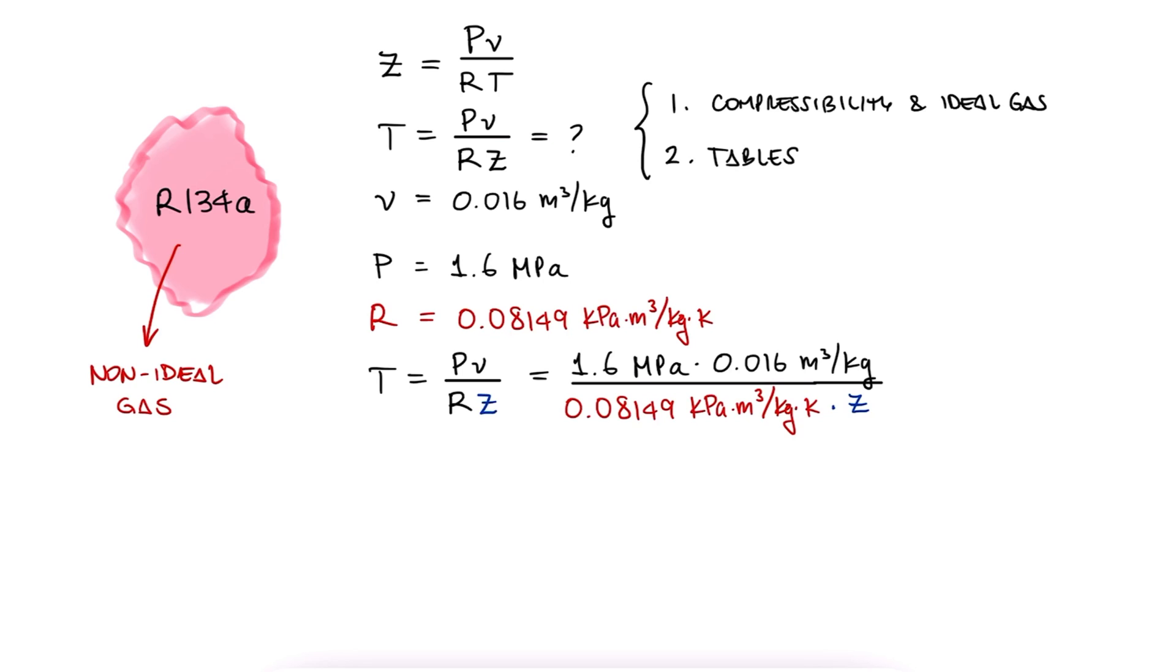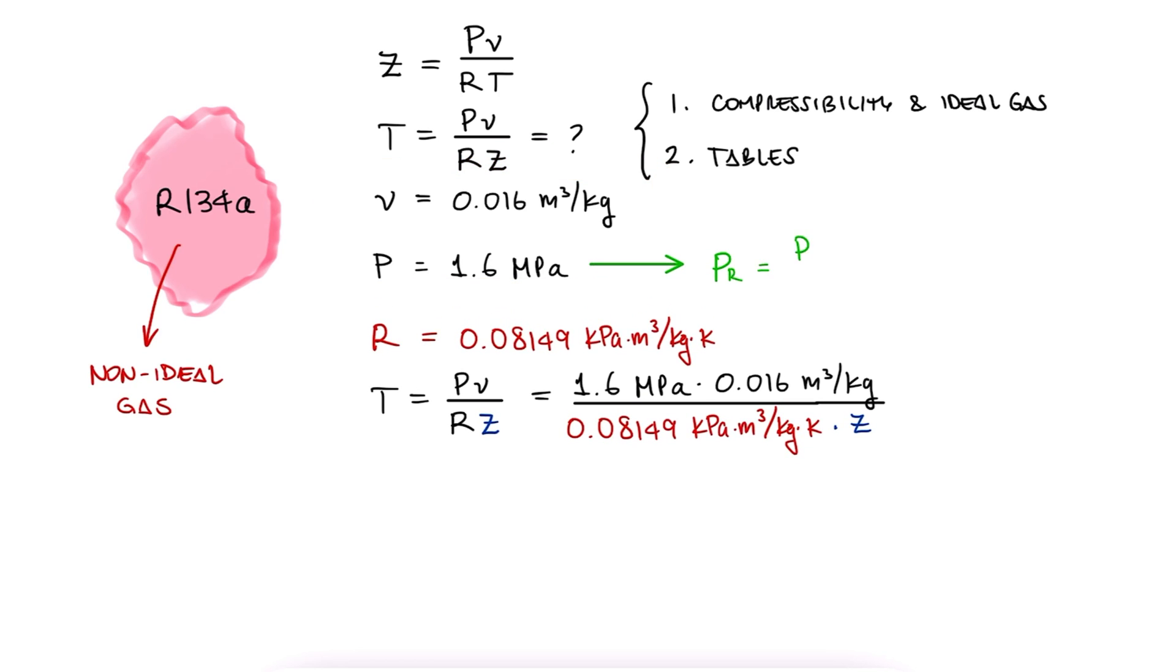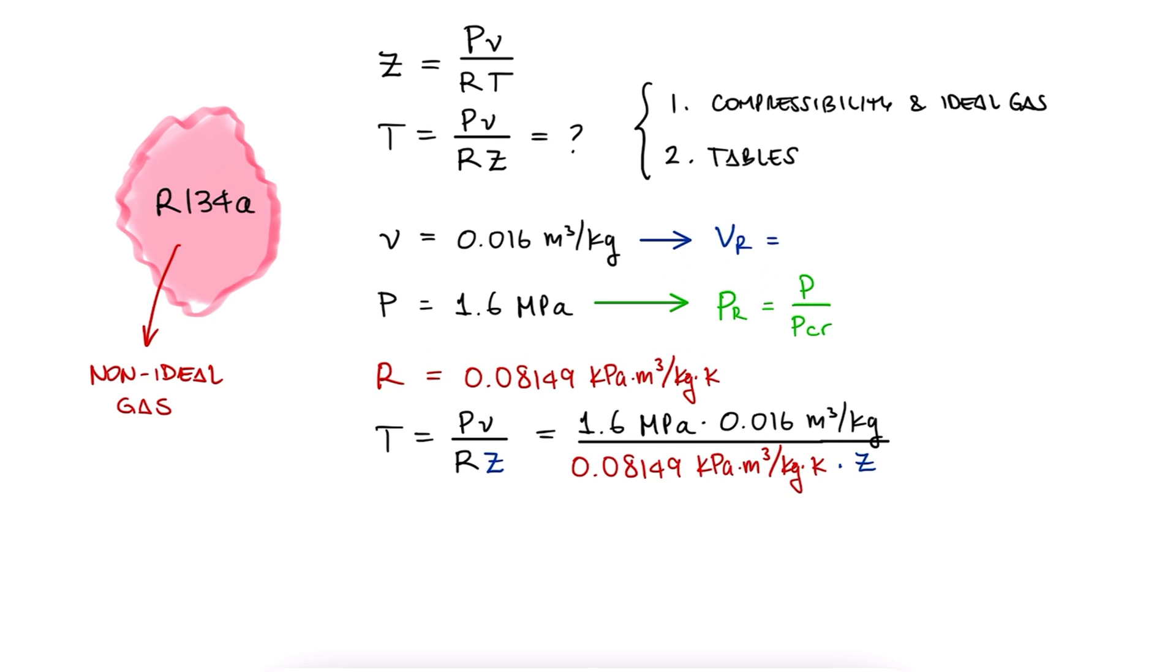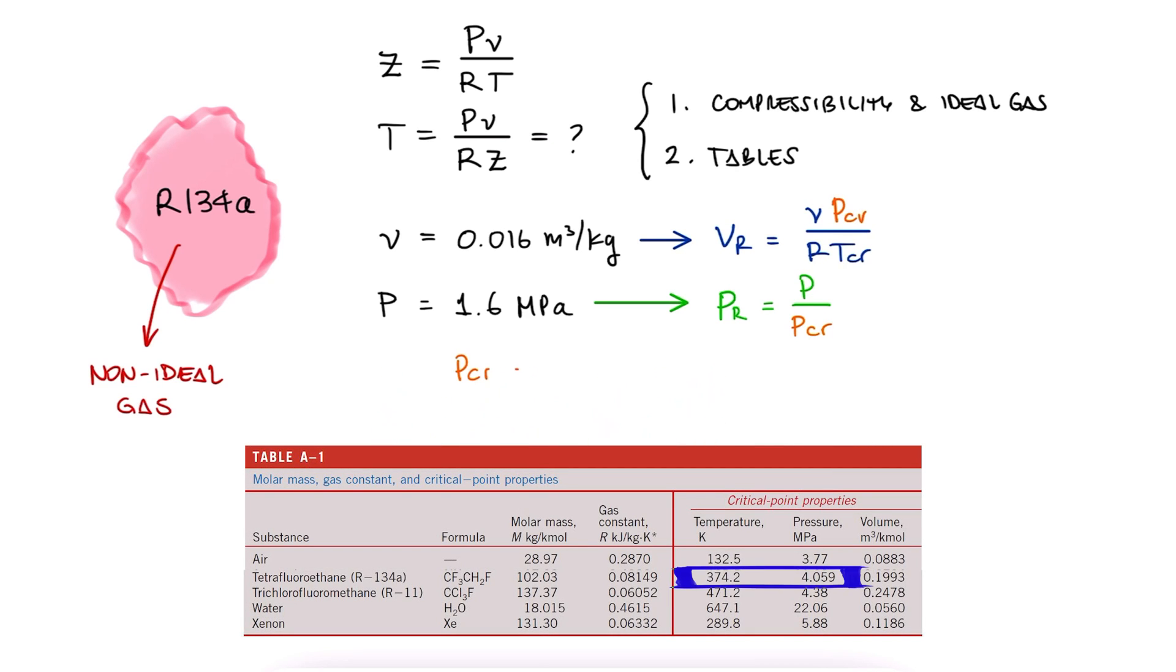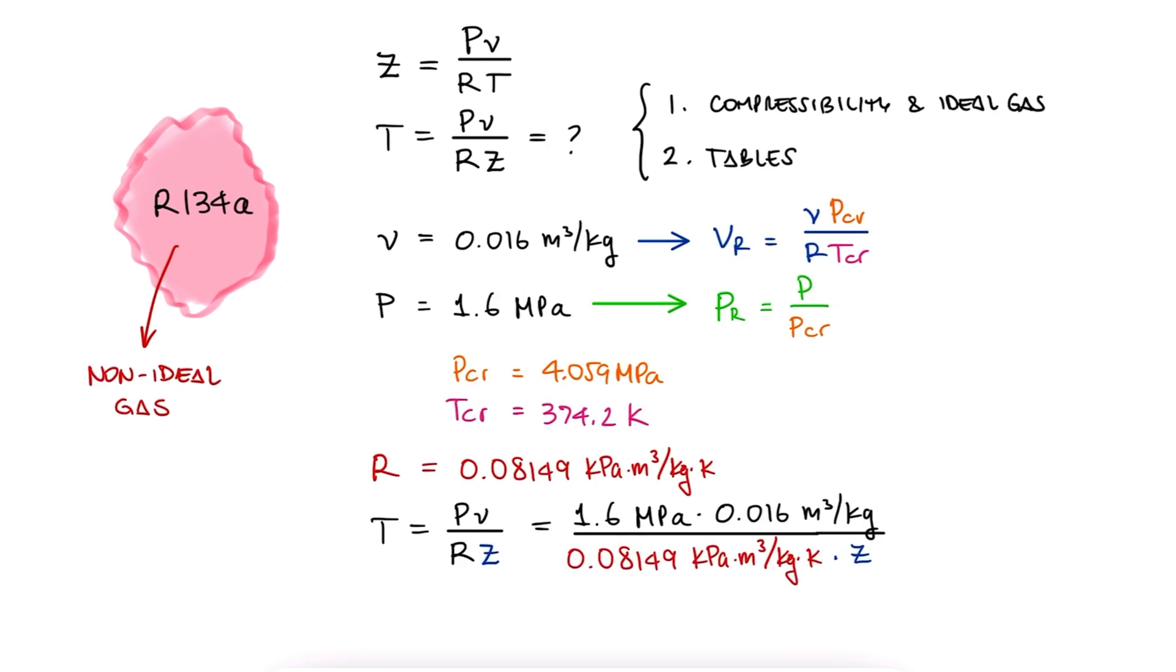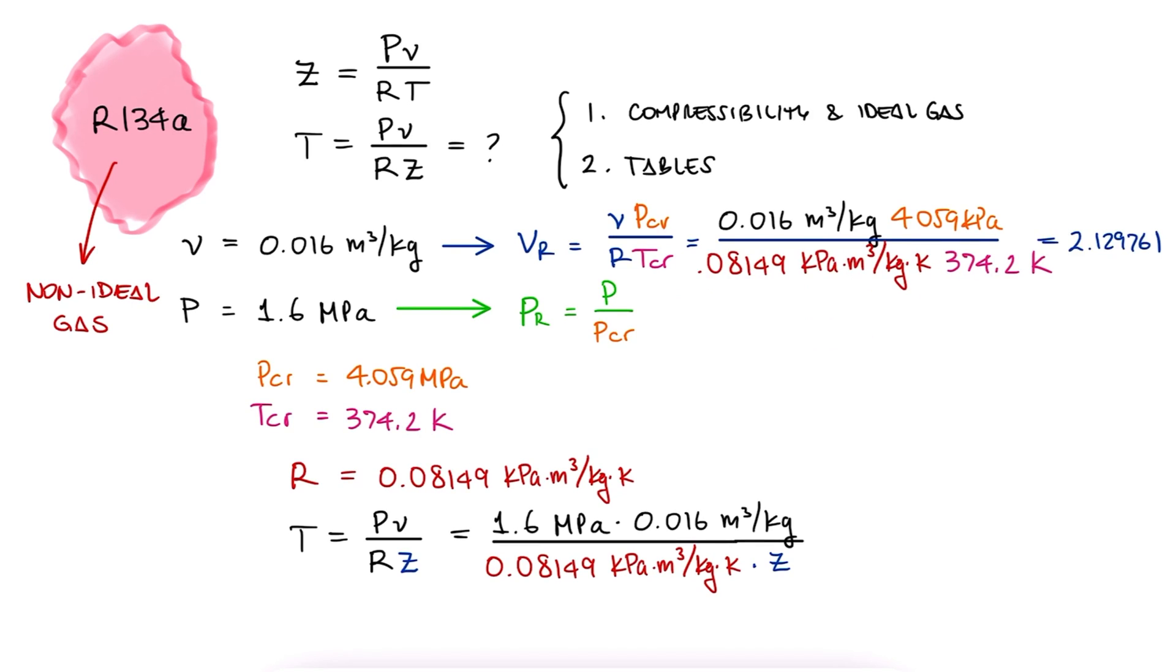All we're missing is that compressibility factor Z. To find it, we'll make use of our charts. In this case, we have the pressure and the specific volume. This means that we can calculate our reduced pressure as P over critical P, and our reduced volume as the specific volume times P critical over R times T critical. We look up the critical pressure and temperature of refrigerant 134A, and with those, calculate the reduced pressure and the reduced volume.